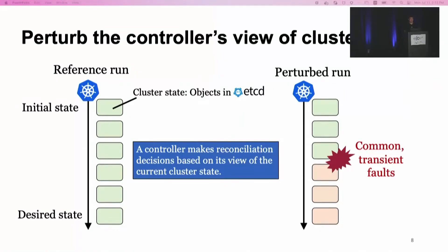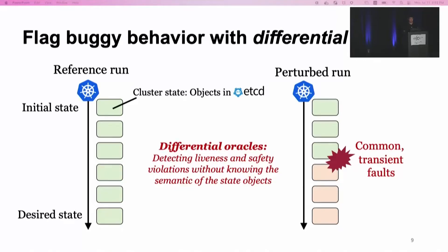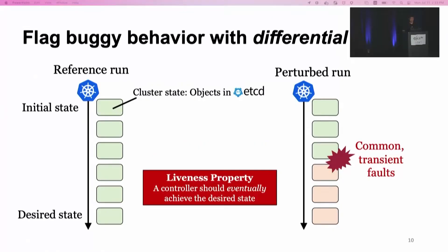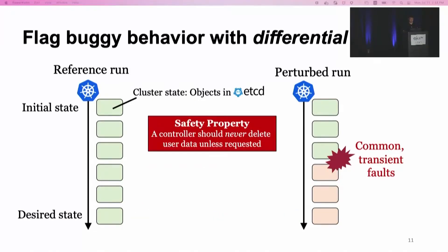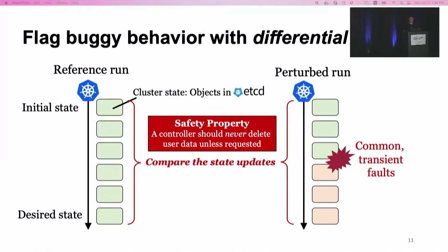We analyze this reference run and produce a perturbation run by running the same reconciliation workload, but the perturbator perturbs the controller's view at some point by injecting common and transient faults that the controller should tolerate. If a bug is triggered, we will end up having a different sequence in the perturbation run. We also need to correctly flag the bug triggered, so we use a differential oracle that compares the two runs to flag bugs. The differential oracle allows us to detect liveness and safety violations without knowing the semantics of these objects.